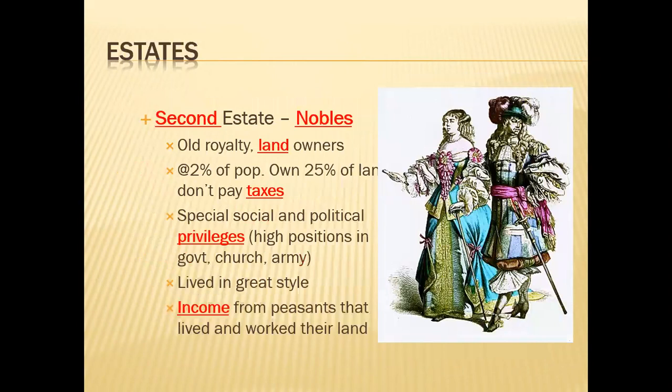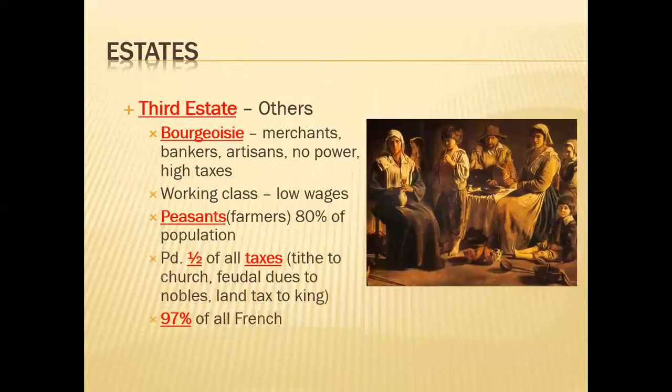The second estate is your nobles — the old nobility families. They are big-time landowners and only about 2% of the population. They own a quarter of the land and don't pay taxes. They have all these special privileges: high positions in government, leadership roles in the church, and they are the officers of the army. Their income comes from the peasants that live and work on their land, which brings us to the third estate.